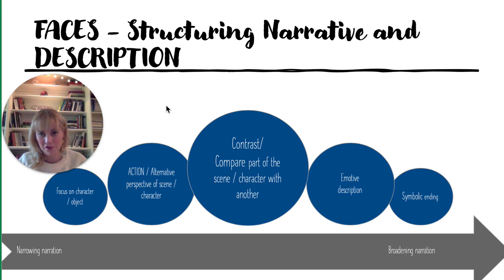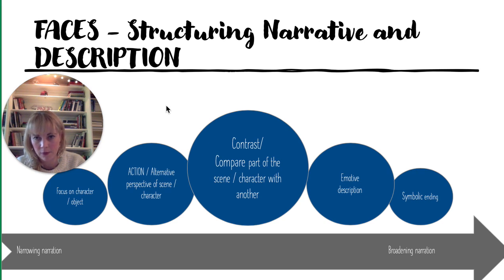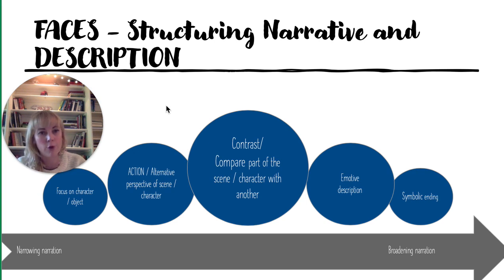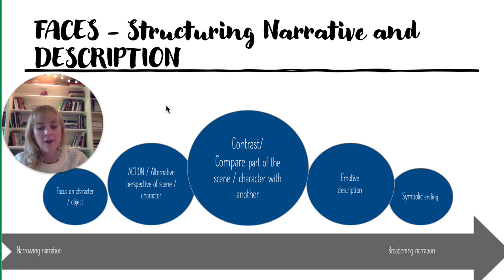That's a lot of talking through structure. Your task now is to plan out your five key paragraphs using subheadings based around FACES: focus on character, action, contrast, emotive description, and symbolic ending. Plan out some ideas for each — what you would focus on for either your description or your narrative. If this all feels way too much, choose three of those to really develop. Pause the video, get those planned out, and I'll see you on the next slide.